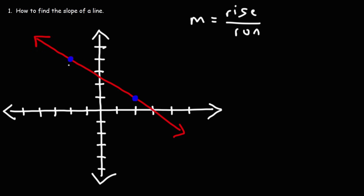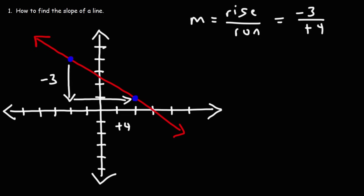Starting from the first point and going to the second, we need to travel down three units, so we have a rise of negative 3. Then we move from left to right and travel four units to get to the second point, giving us a run of positive 4. So the slope is negative 3 over 4.